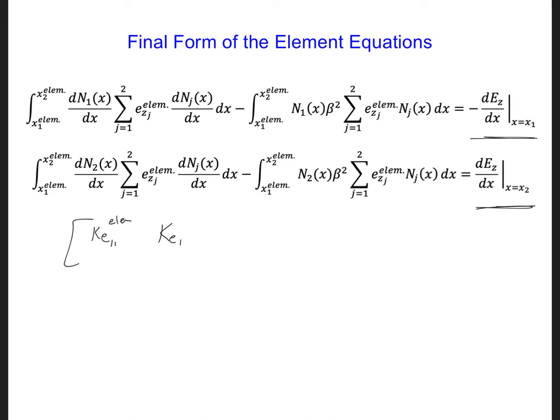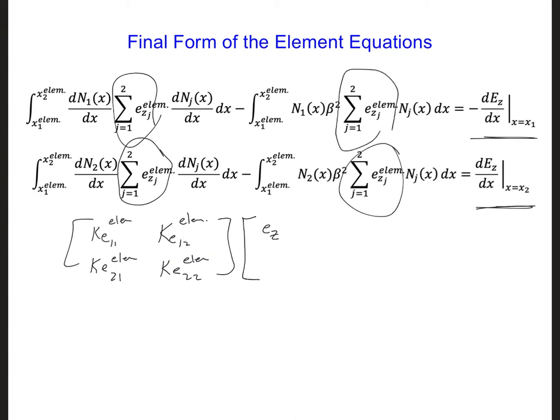ke12 element, ke21, and ke22. So this coefficient matrix is a 2 by 2 coefficient matrix. And we'll have two ez's from this summation. Each of these terms has a summation. So ez1 for the element, since there's two nodes, and ez2 for the element.